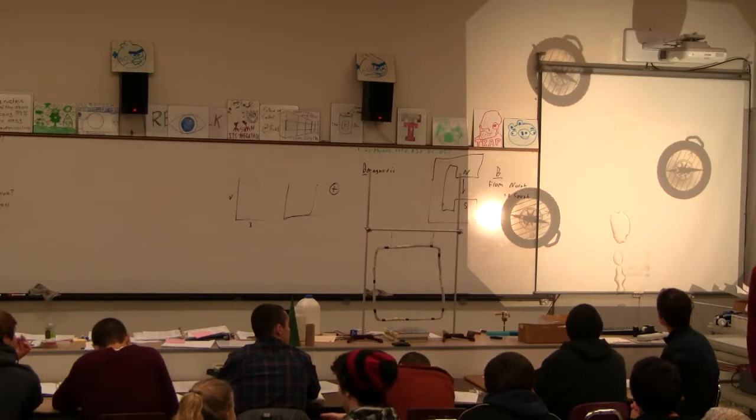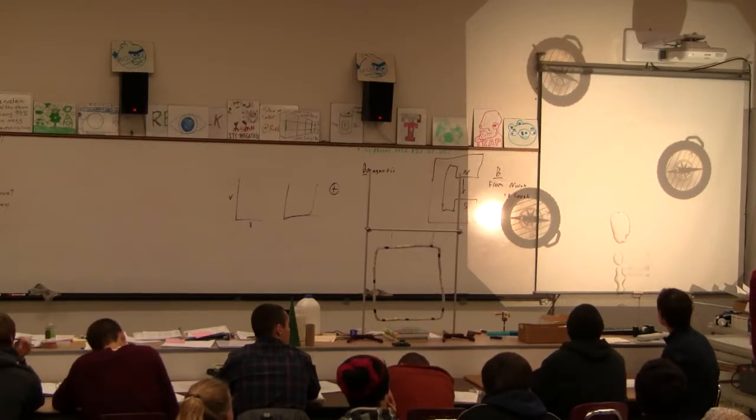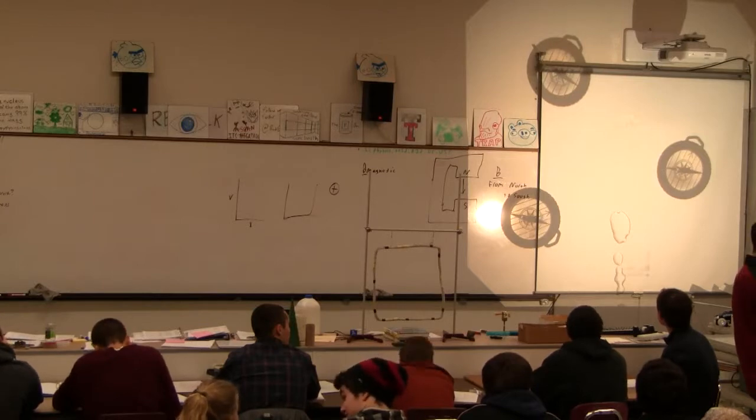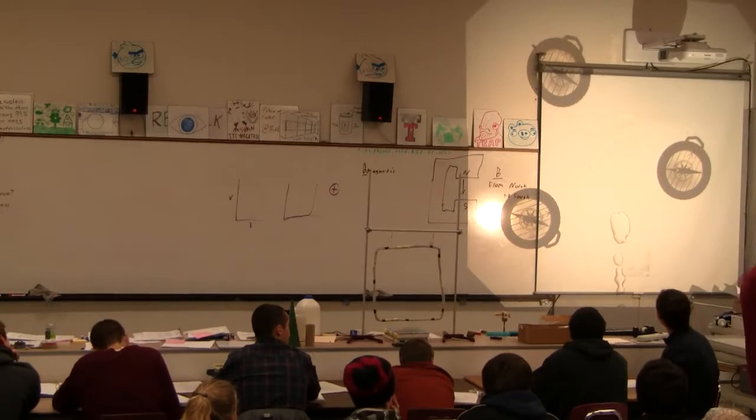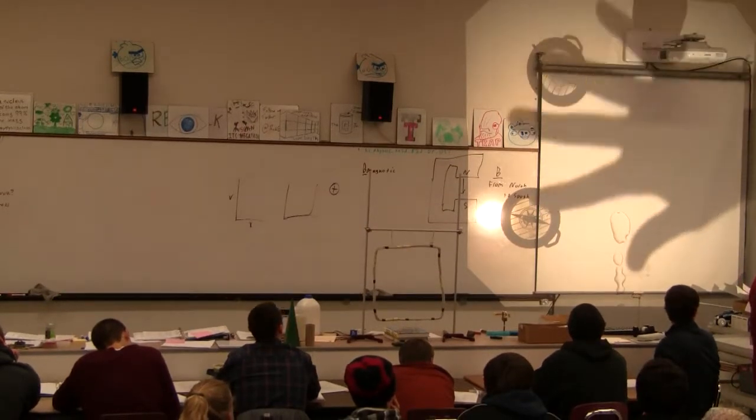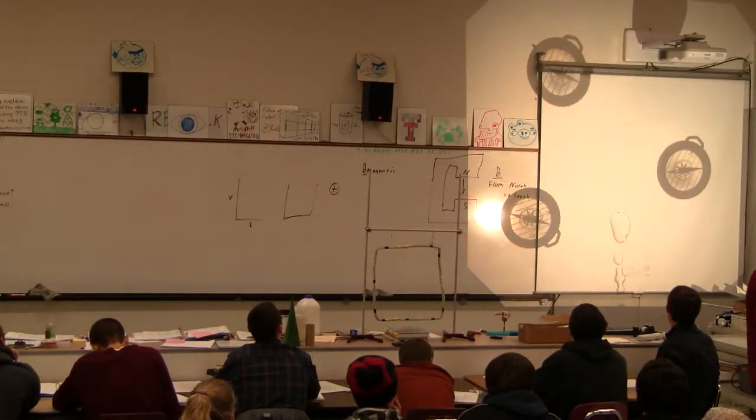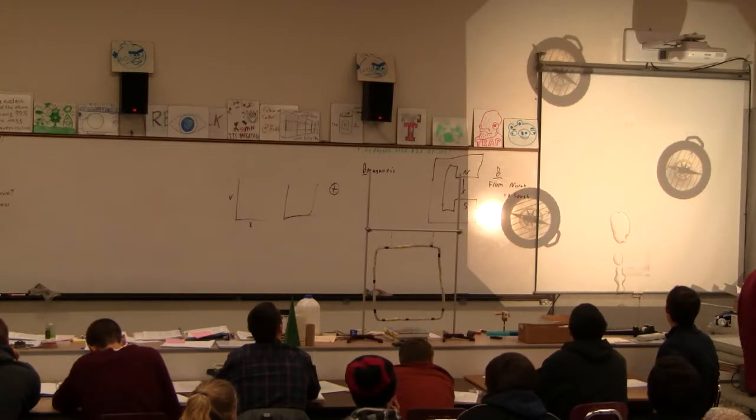But anyway, these guys all swing, and they orient themselves more or less to the direction. Now watch the ones farther away from it. Do you see that they're not quite as enthusiastic? Do you see that? So there's actually more alignment close to the magnet, less alignment farther away. This is key. This is a key thing.